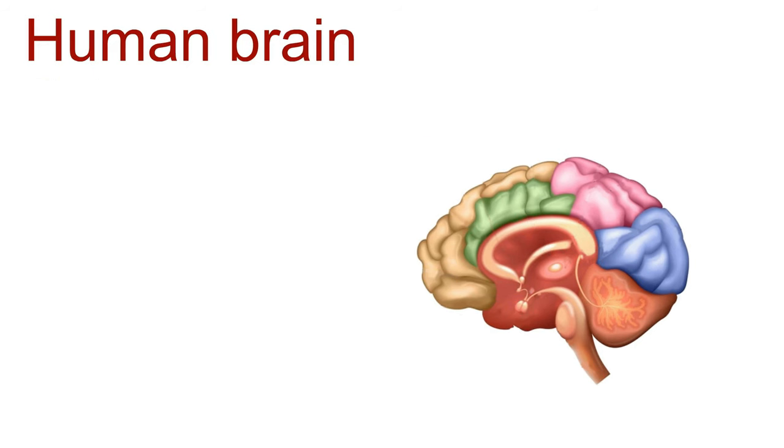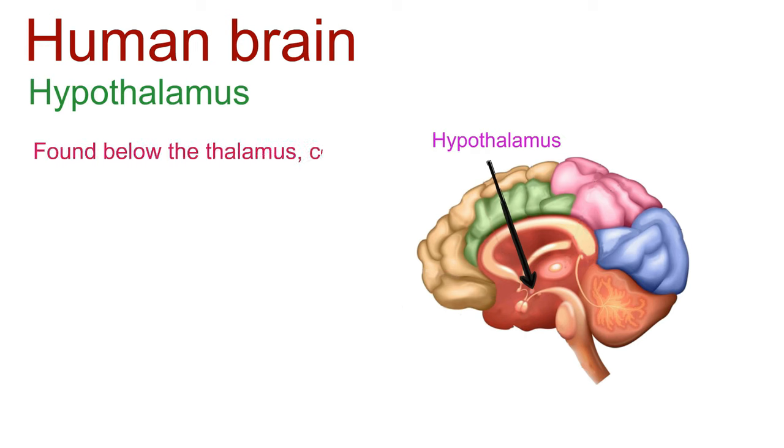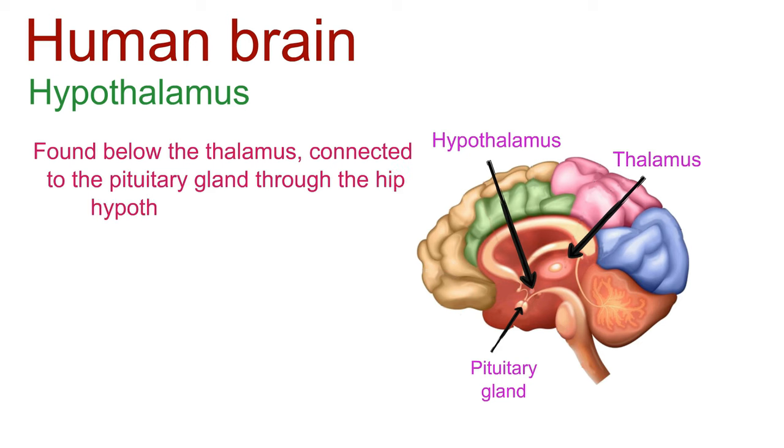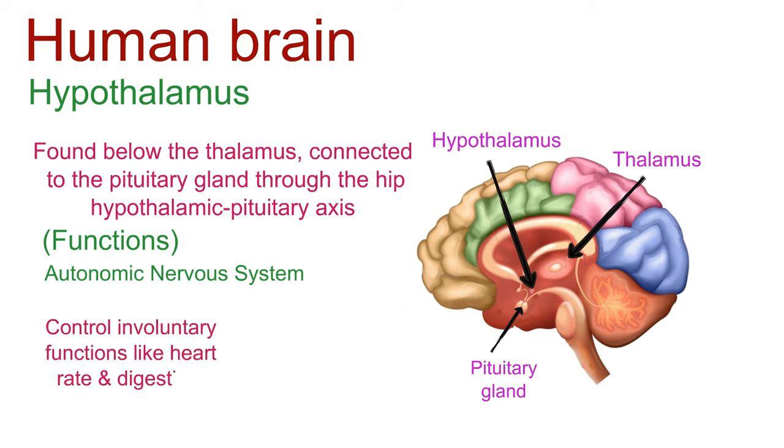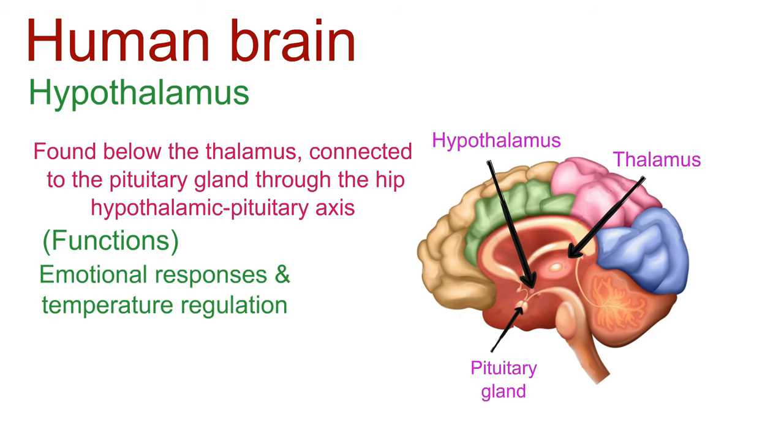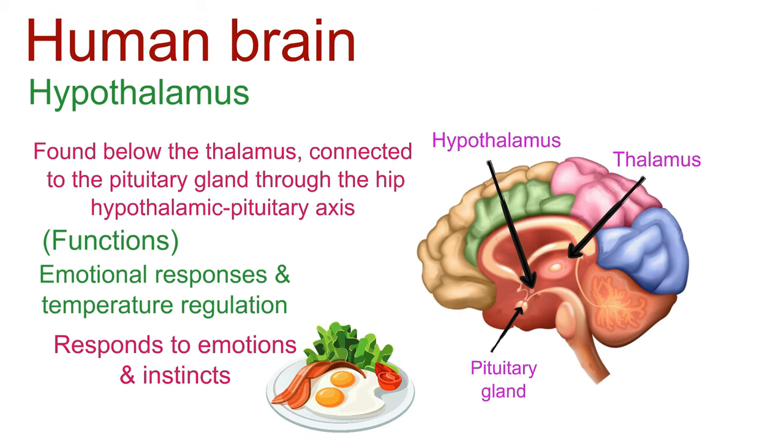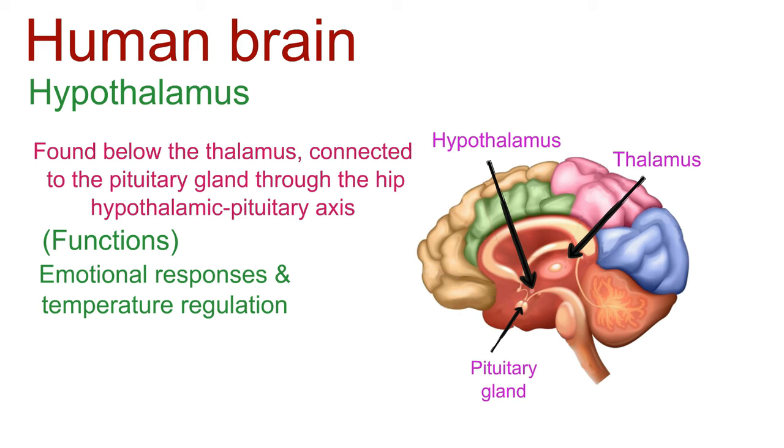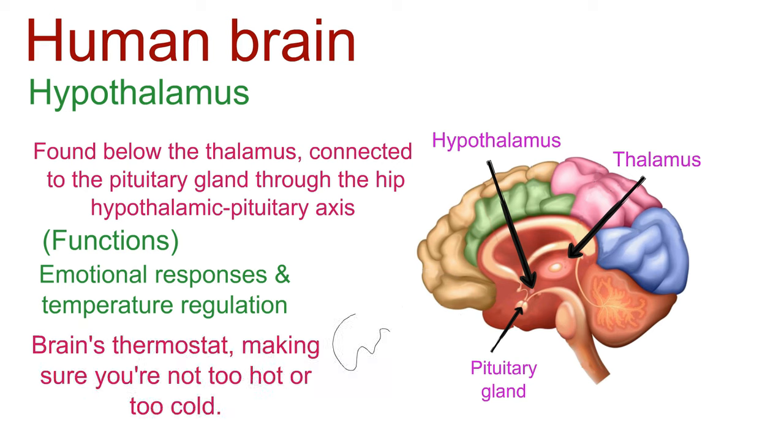Now, let's chill with the brain's best friend, the hypothalamus. Chilling below the thalamus, it's connected to the pituitary gland through the hypothalamic pituitary axis. It is like a remote control for functions like heart rate and digestion. It acts as the emotional compass for crucial functions such as survival instincts, regulation of hunger, and management of thirst, and also as your brain's thermostat, making sure you're not too hot or too cold.